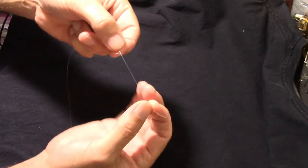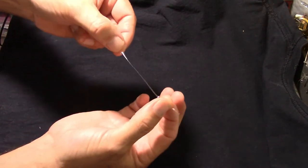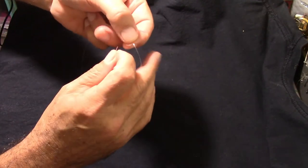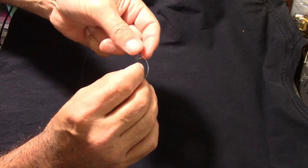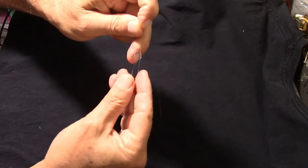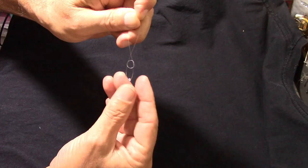I've got about three inches from the knot down. I'm going to take that tag end and put it up through the knot and then slide that knot down closer to the eye of the hook.